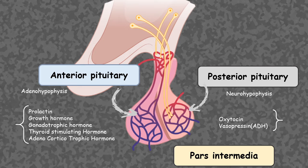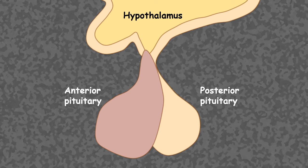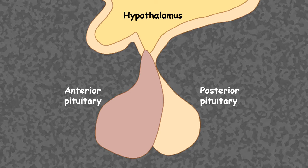The anterior and posterior pituitary are not only different in terms of their anatomical location, but their developmental origin is also different. We simplify the pituitary diagram as a structure appearing to hang from the hypothalamic region, with the anterior pituitary and posterior pituitary visible.